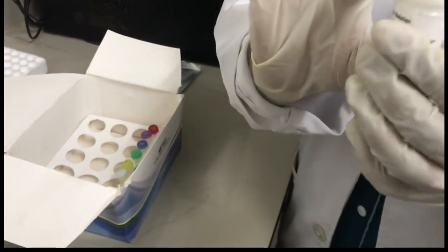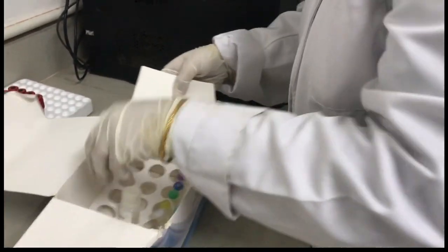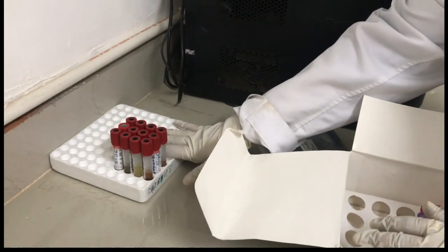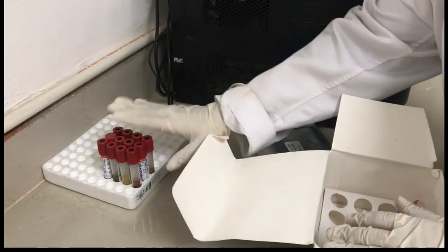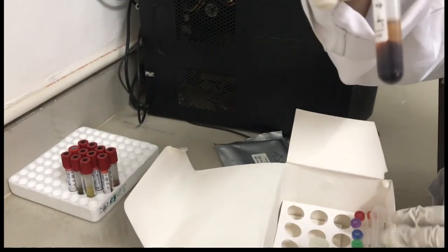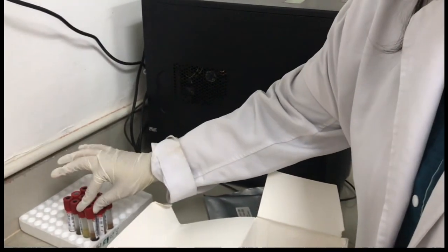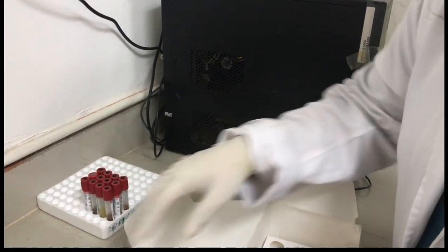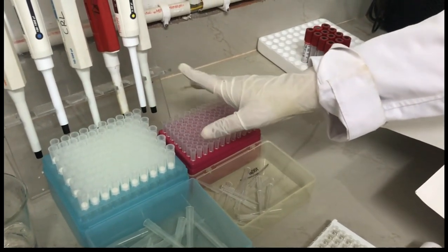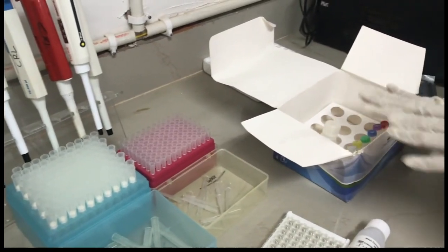Now we are going to start with the procedure. These are the samples which we have kept already, which we are going to measure the TSH levels in. The serum which we have already centrifuged has been kept in vials. These are the micro tips which we will be using. These are the micro pipettes which are used. We are going to start the procedure.